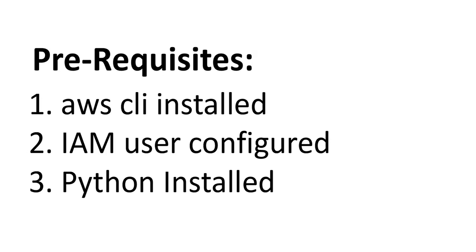First, let's look at the prerequisites. If you want to run this Python code in your local machine, you need to have AWS CLI installed. Once you have installed the AWS CLI, you need to configure an IAM user on your machine. I also assume that you have Python installed since you'll be running Python code.